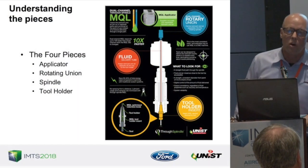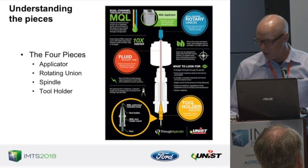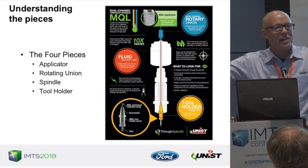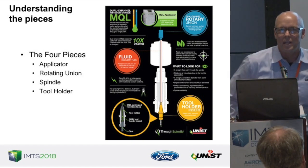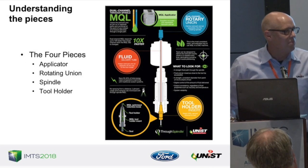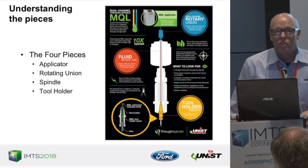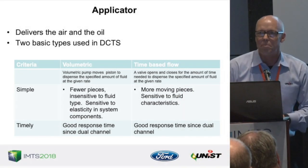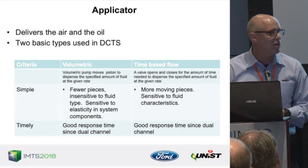For dual-channel through-spindle MQL, we're going to discuss four key components: the applicator, the rotating union, the spindle, and the tool holder. On applicators, there are two basic types — I'll be upfront that I'm biased since UNIST makes one type. There's a volumetric approach, which uses a piston-and-cylinder pump: you set the volume by piston travel in a cylinder, then push it out at a controlled rate.